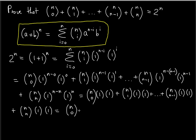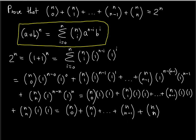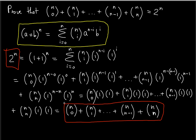What we get as a result is n choose 0 plus n choose 1, continuing until the last two terms, n choose n minus 1 plus n choose n. So we've successfully shown that these two sides are indeed equal. We started from the right side and showed it equals the left side. I hope this was helpful — thank you for watching, see you in the next video.